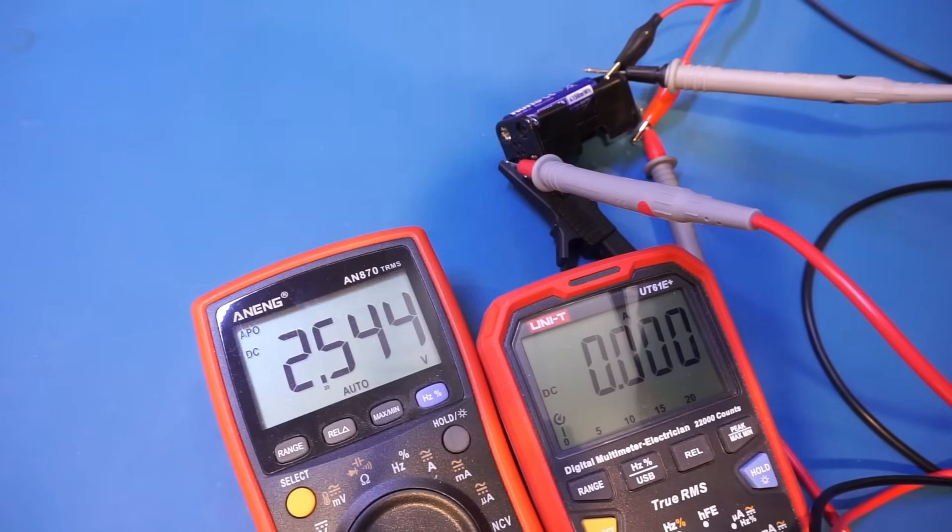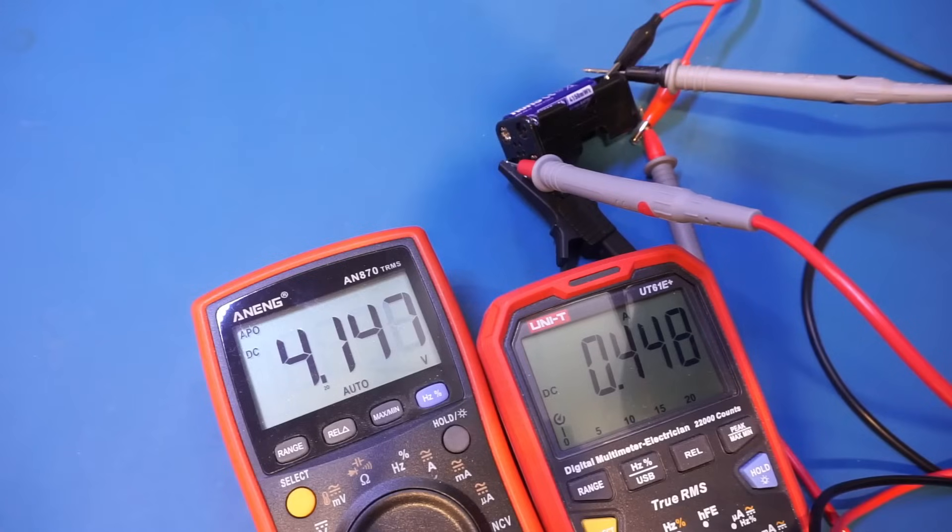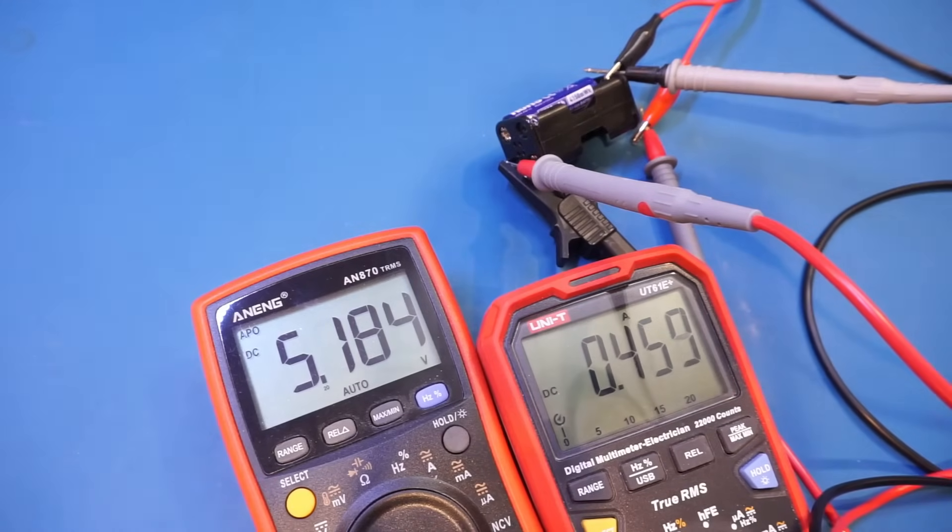You can see that right now we're at 2.5V. There's still no current flowing in. Let me go down. Let's see roughly at 3.5V, we started seeing the charging current. And let's increase it to 5V. So you can see that the charging current is around 450 milliamps.